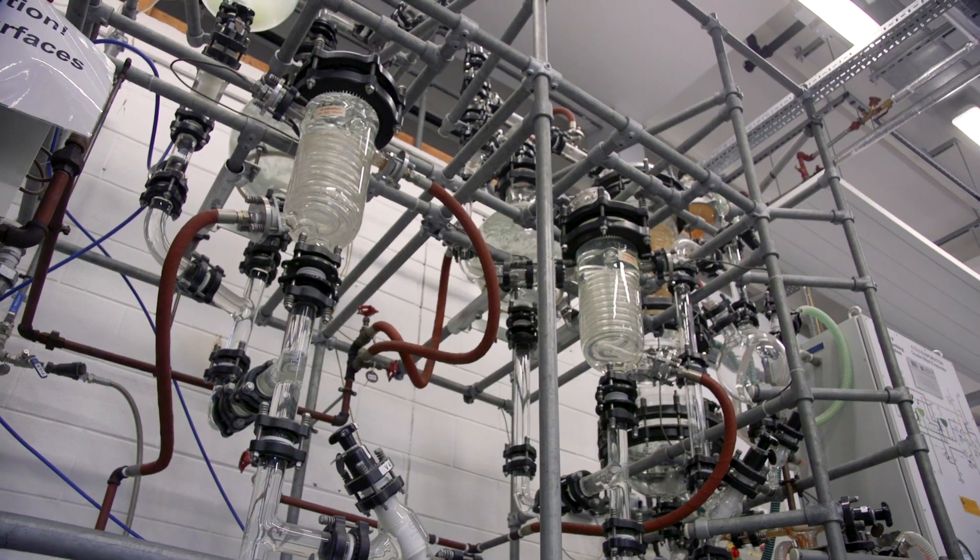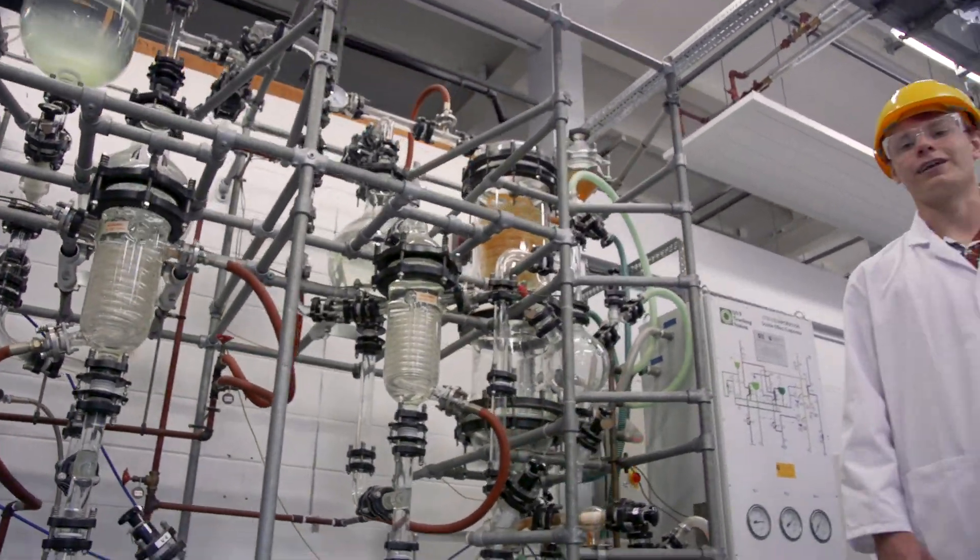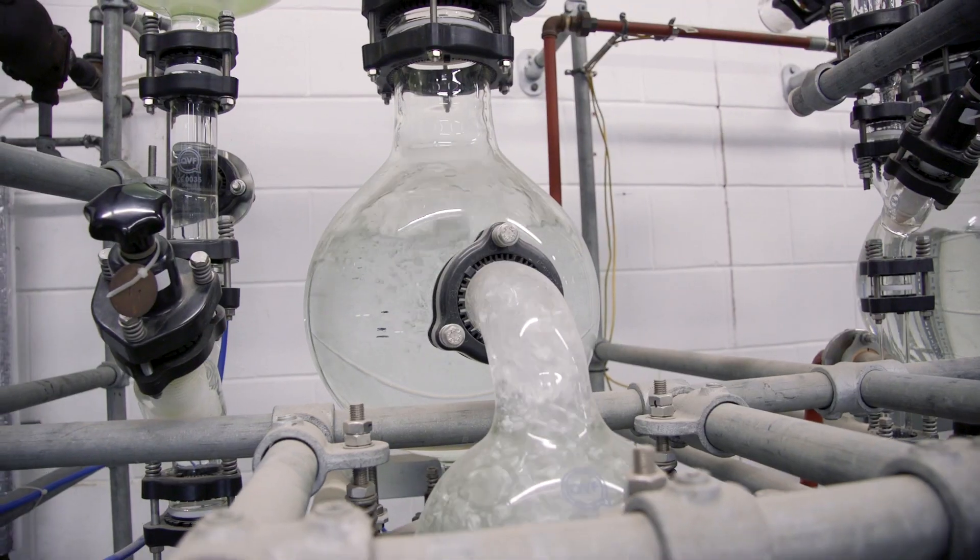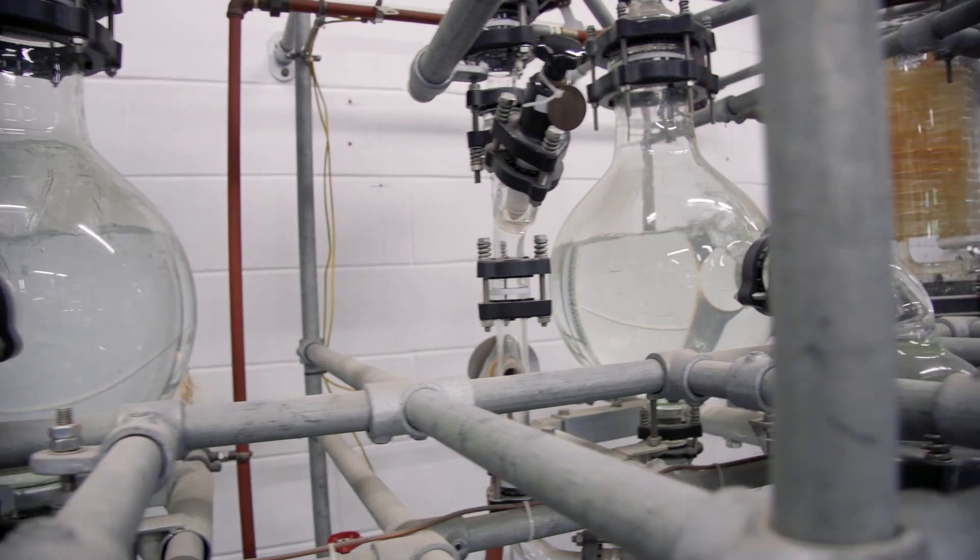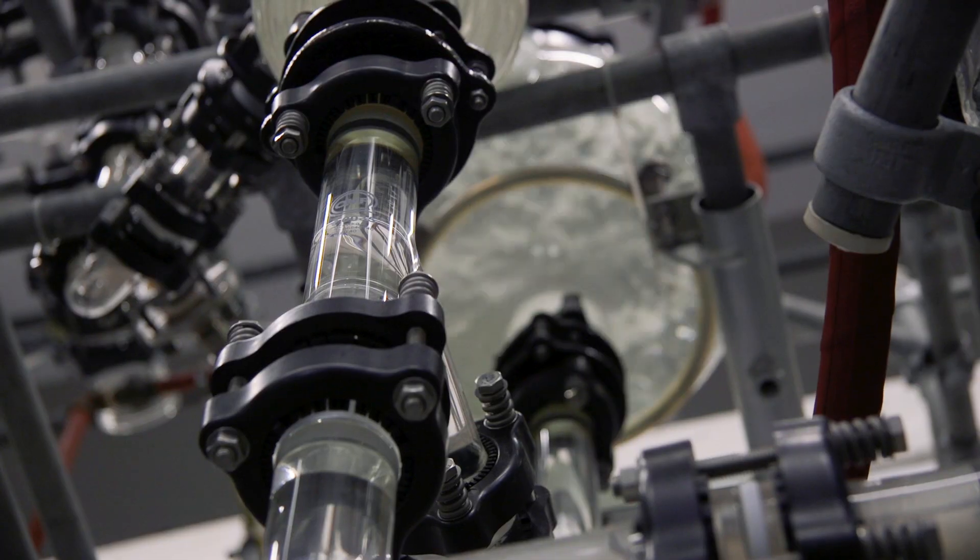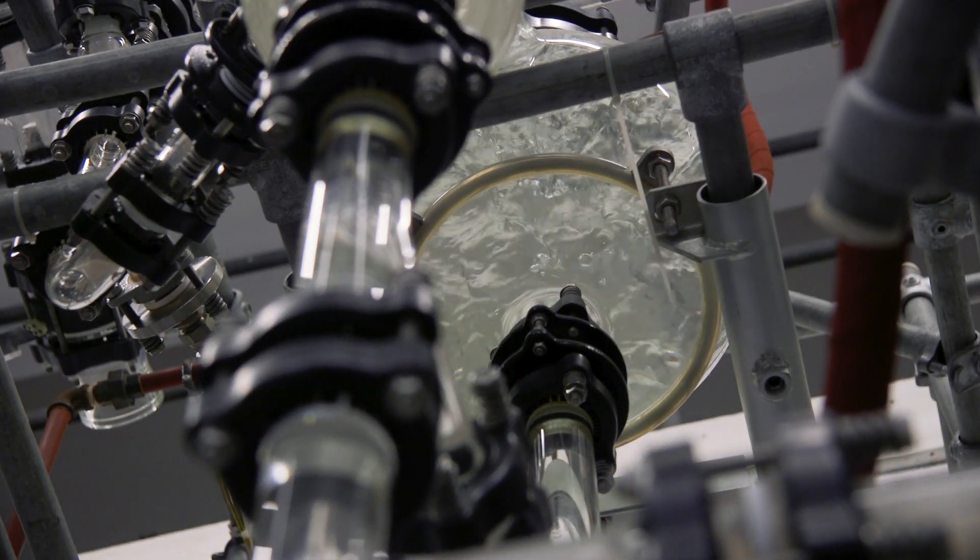Here we have another key industrial process in the world of chemical engineering known as a double effect evaporator. Essentially it takes the steam produced in the first evaporation cycle and recycles it to be used in the second evaporation cycle. It's energy efficient and cost effective, perfect chemical engineering.